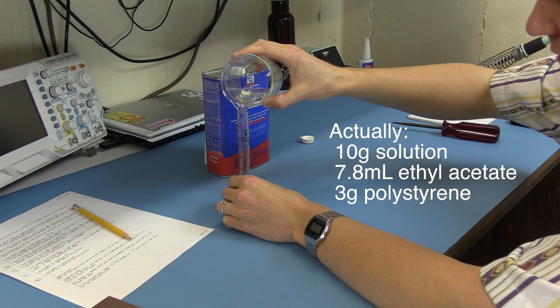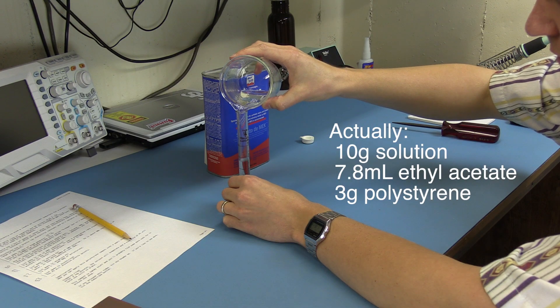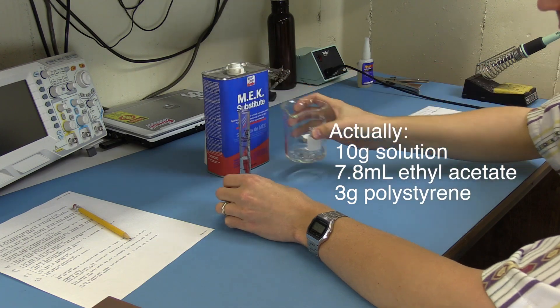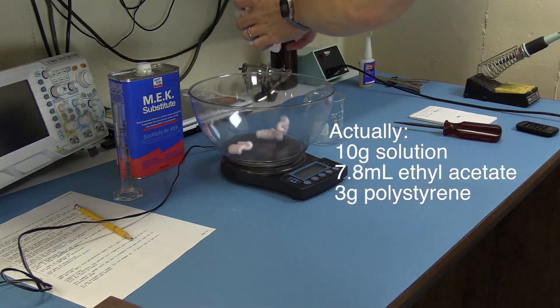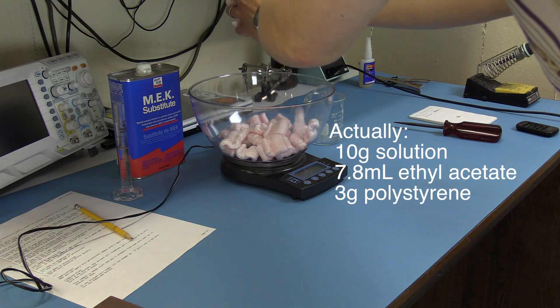Ethyl acetate has a density of about 90% of that of water, so that works out to something like 78 milliliters, and then to that I'll add 30 grams of polystyrene.